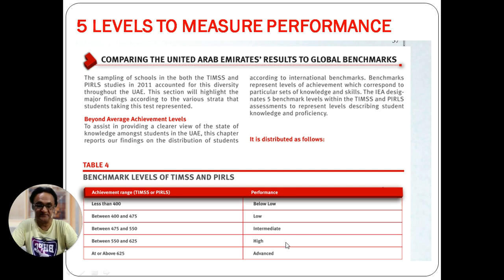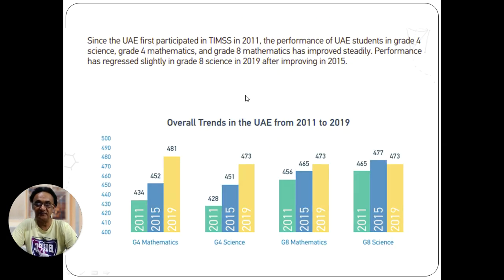This is the most important part — how to interpret bar graph questions for TIMSS. A report has been published comparing UAE scores across 2007, 2011, 2015, and 2019. Looking at Grade 4 Mathematics, the UAE score in 2019 was 481. I cross-checked this data, and this is the information you need to look at carefully.